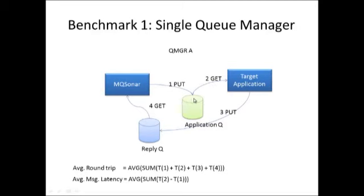The average message latency is really the difference between the moment the message actually arrives in the queue — which we capture via a confirm-on-arrival report — and the time the message is actually dequeued and delivered to the application, which is the confirm-on-delivery. So you have an average of the time difference between T2 and T1, which is the difference between the confirm-on-delivery and the confirm-on-arrival.